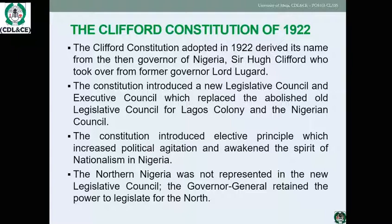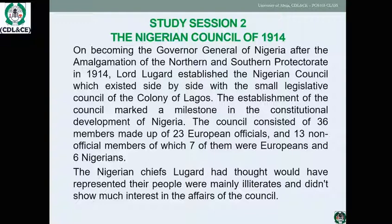Regarding the composition of the council, the Nigerian Council of 1914 introduced a new legislative council and marked a milestone in the constitutional development of Nigeria. The council consisted of 36 members: 23 European officials and 13 official members, seven of whom were Europeans and six were Nigerians.